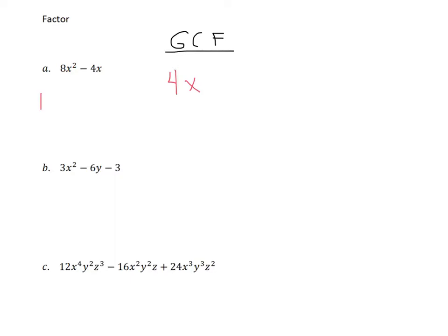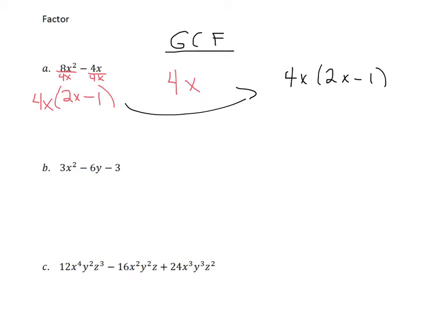So what we're going to do is write 4x out in front, make our parentheses, and divide each of these terms by 4x. We write the result inside the parentheses. 8 divided by 4 is 2, x squared divided by x is x. Minus — what's 4x divided by 4x? Anything divided by itself is 1. You can always check by distributing and seeing if you get back to what you started with. 4x times 2x is 8x squared, 4x times negative 1 is negative 4x, and we got back to where we started.